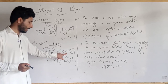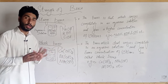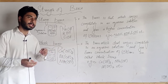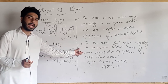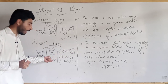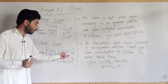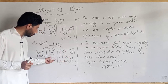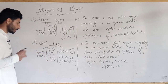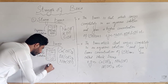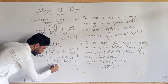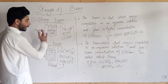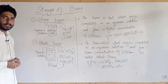If you have OH⁻ ions at a low concentration, that indicates a weak base. A base with a low concentration of OH⁻ ions is a weak base. In contrast, a strong base is one that fully ionizes and gives a high OH⁻ concentration in solution.